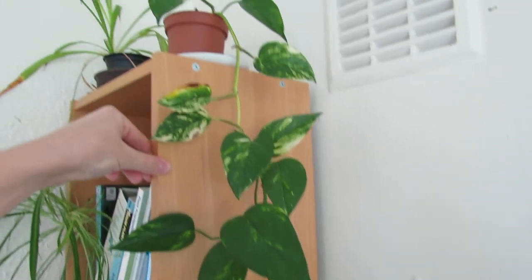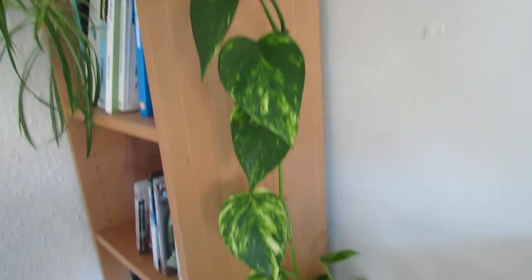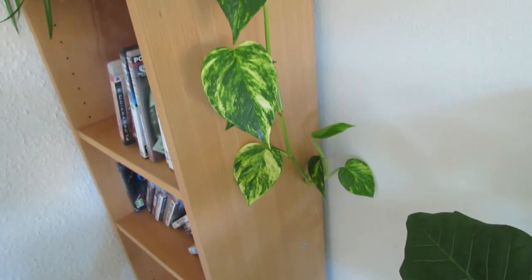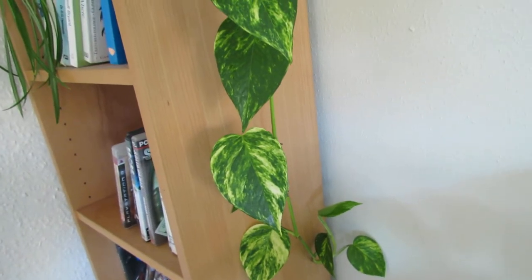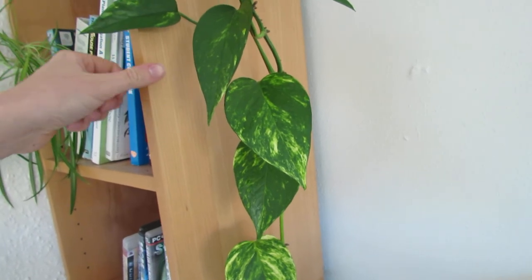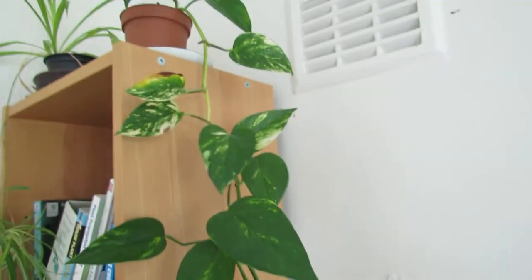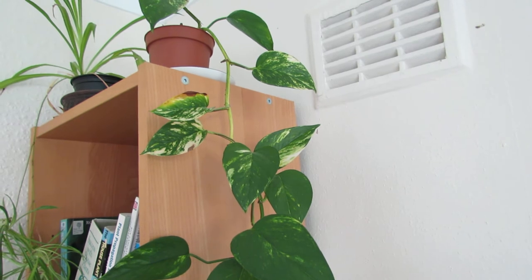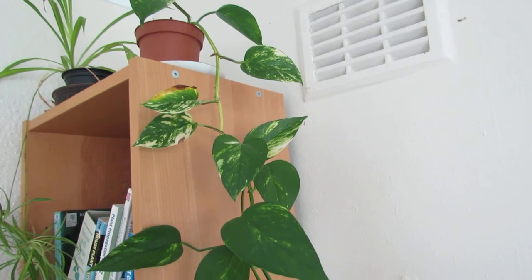But interestingly you can actually tell from the leaves what stage of the year it has been growing at. Because the more light that the Pothos vine gets, if it's a variegated variety, the variegation varies depending on the light intensity.